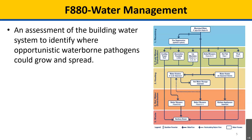Current standards recommend the following, and surveyors should determine, through interview or record review as necessary, whether the facility has assessed the building water system to identify where opportunistic waterborne pathogens could grow and spread. For example, facilities may have a description of the building water system using text and flow diagrams.